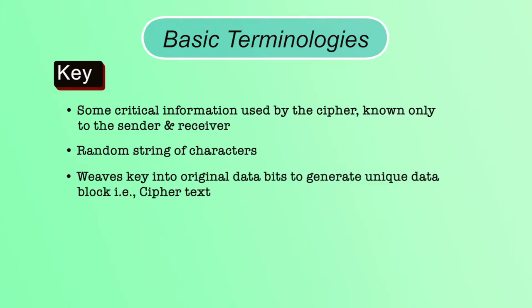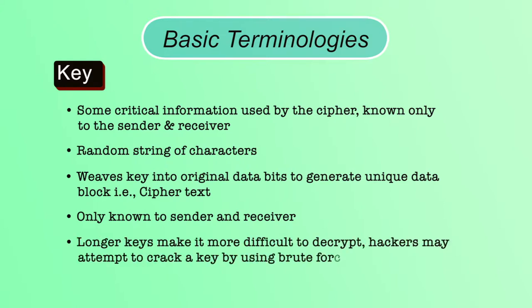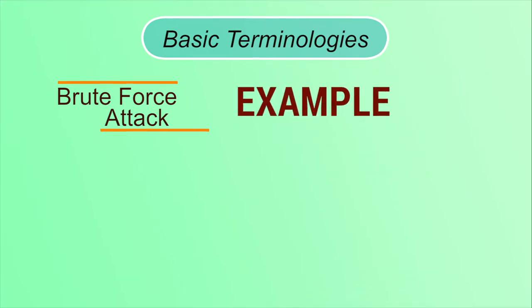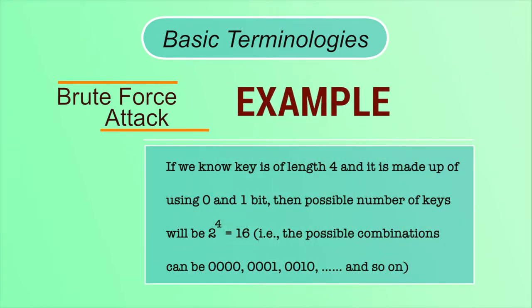The security of a cipher depends on the key. It should be known only to the sender and receiver. If an attacker knows the key, he or she can easily identify the original message. If we use a key of shorter length, an attacker can easily identify it using a brute force attack. That's why longer keys are difficult to decrypt. In brute force, the attacker tries every possible key combination — for example, a 4-bit key has 2 to the power of 4, which equals 16 possible combinations.